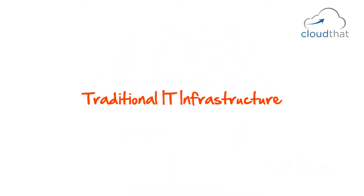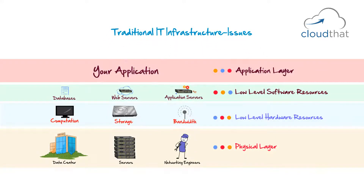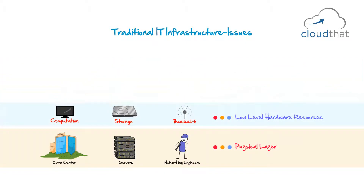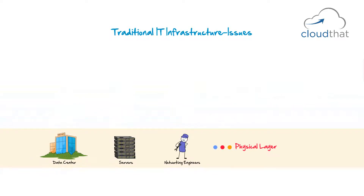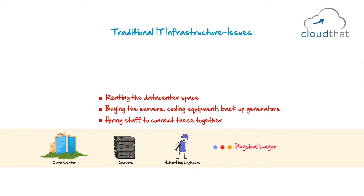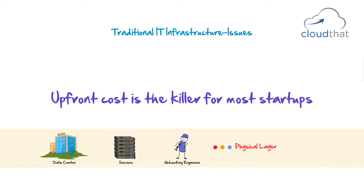Traditional IT infrastructure has a lot of issues. At the physical layer, the biggest issue is that you need a lot of capital upfront — renting the data center space, buying the servers, cooling equipment, backup generators, hiring staff to connect these servers. This is a huge upfront cost before you even start earning, and upfront cost is the killer for most startups.